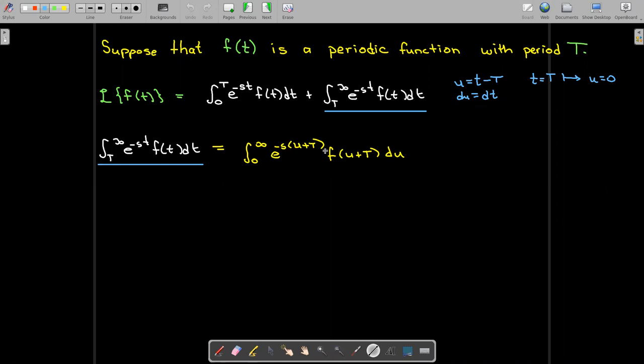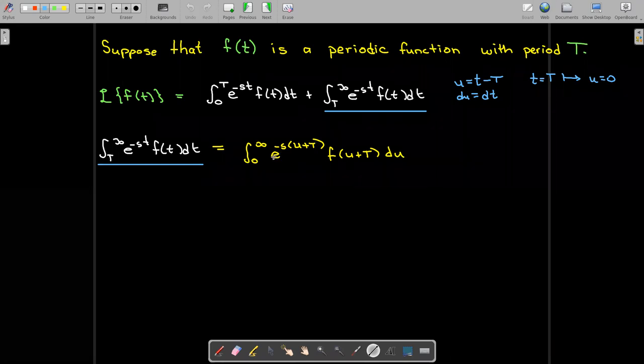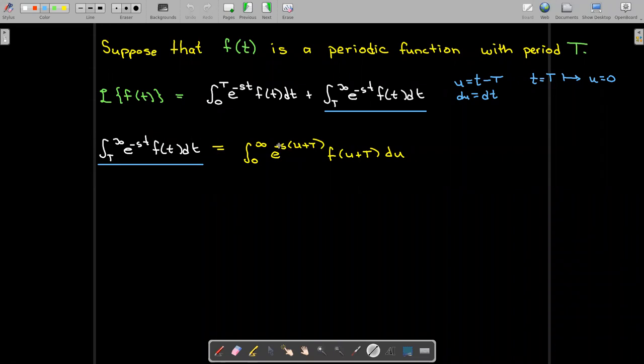We'll handle these two functions differently. I can use the distributive property in the exponent to get e^(-su) and e^(-sT). In this integral, s and capital T are constants, so I can write that as the product e^(-sT) times e^(-su), and that first e^(-sT) can be factored outside of the integral.